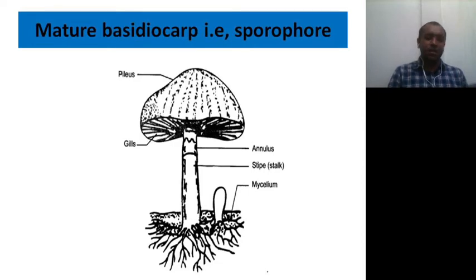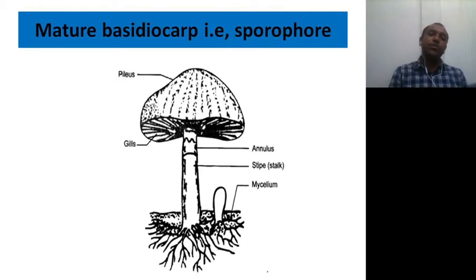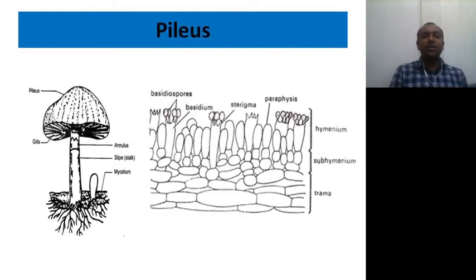The basidiocarp is a multicellular structure on which the sexually reproducing hymenium is produced. The umbrella-like portion is the pileus. On the ventral surface — the inner side of the pileus — are gill-like structures radiating from within the pileus. There is also a stalk-like structure called the stipe, and just above the stipe a thin membranous structure known as the annulus.